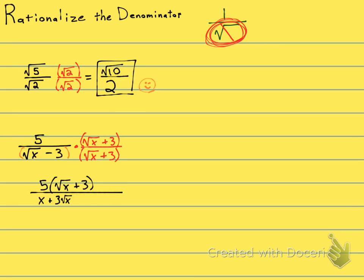Now the inner two is minus 3 times square root of x. Look at that — these two will cancel out. The last two is negative 3 times 3, which is minus 9. You see how the middle two cancel out? When you multiply conjugates, the middle two cancel. Plus 3 square roots of x minus 3 square roots of x is zero square roots of x.